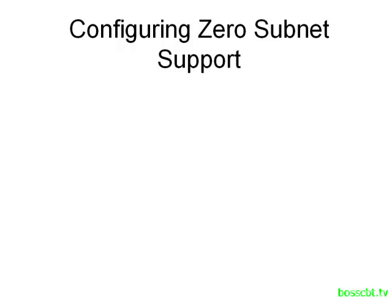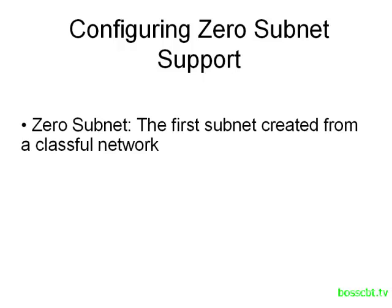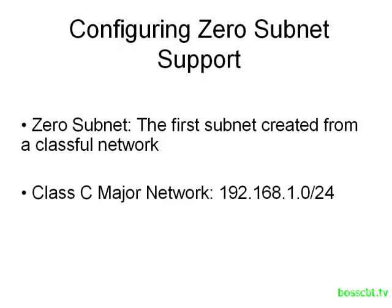In ICND1, we introduced the concept of the zero subnet when we were talking about IP addressing and subnetting. The zero subnet is just the first subnet created from a classful network, and it happens to share the same subnet number as that classful network. So for example, if we have a major network here, it's a Class C — you can see it's obviously a slash 24 — 192.168.1.0.